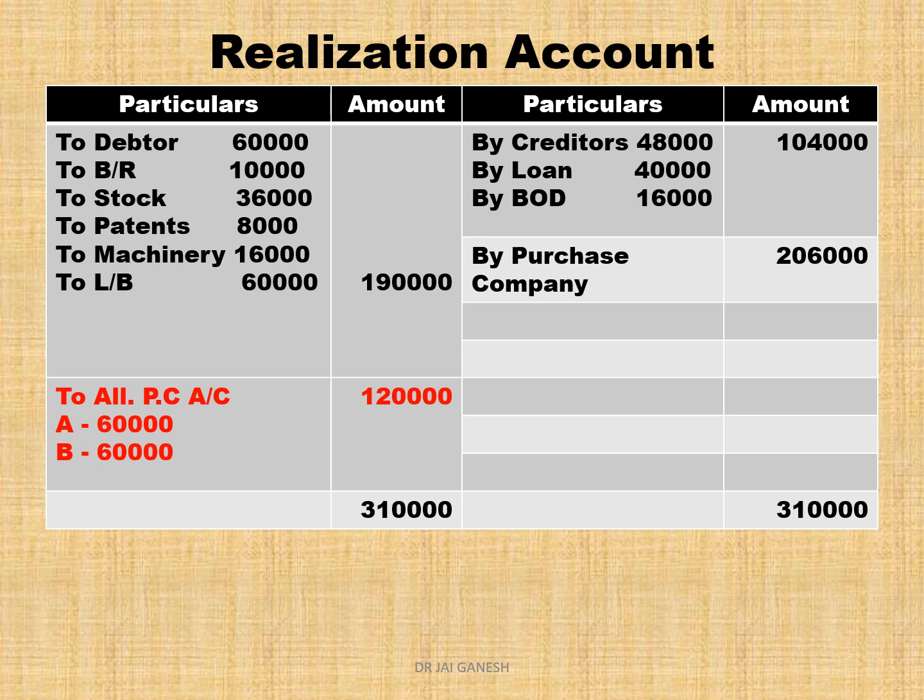Realization account: transfer all assets from the balance sheet to the debit side — debtors 60,000, BR 10,000, stock 36,000, patent 8,000, machinery 16,000, land and building 60,000. On the credit side, write: by creditors, by loan, by BOD — transferring liabilities from the balance sheet. Then write by purchasing company (PC) = 2,06,000. Since the credit total is more, you get a realization profit of 1,20,000.